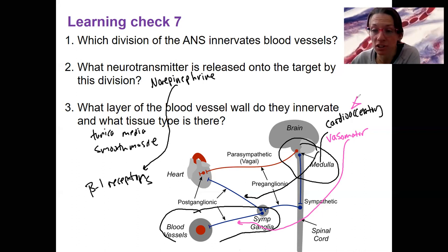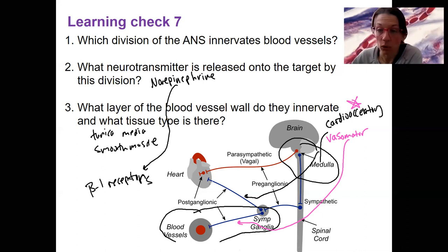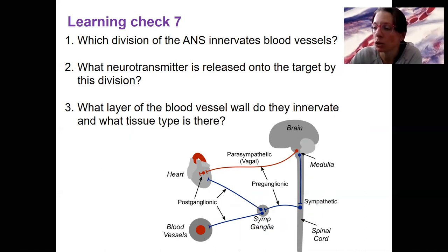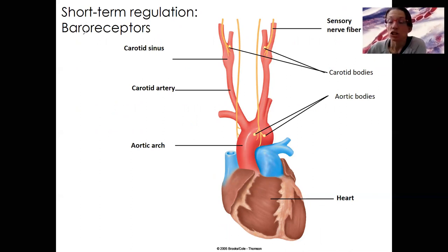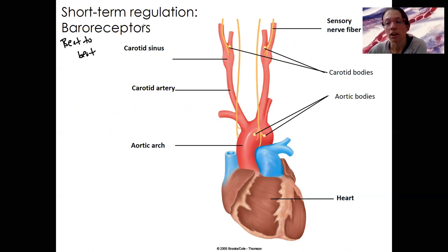So how do these brain regions get stimulated? Something's got to tell them — they're integrators. Something is going to detect high or low blood pressure and tell these brain regions to fire and tell the target organ to respond. High and low blood pressure is detected by something called baroreceptors. 'Baro' refers to pressure. This is short-term regulation — beat to beat. Each beat, this regulation is occurring to adjust for changes in your activity and your posture. This is what happens when you stand up quickly — these receptors are to thank when you don't faint each time you stand up.